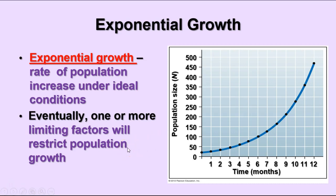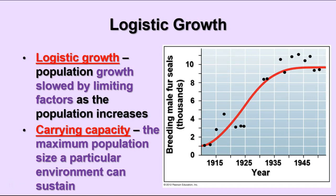When we talk about population growth, there are a couple of different patterns we see when studying populations over time. One pattern is called exponential growth — the rate a population increases under ideal conditions when there's plenty of food, water, and space. Over time the population continues increasing in a geometric progression. Eventually population growth has to slow down because various factors limit it. When growth reaches that point where factors are limiting it, we call that pattern logistic growth.